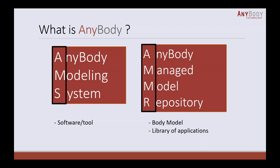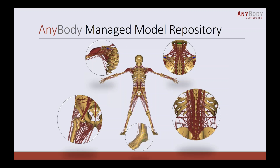The AMMR contains various models including our full body human model and a library of various applications. The model is the most detailed musculoskeletal model available, containing almost 1,000 individual muscle units. It is a generic model parameterized in many ways — an open, validated, and fully scalable model. Open model means it is open to be adapted to your particular needs. Everything in the model is accessible and documented with publications, so if you want to change muscles, bones, or joints, you can easily do that.